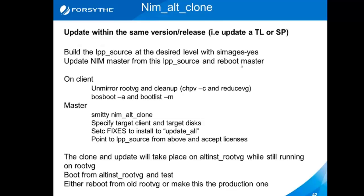In order to set it up, you're going to have to either have an additional disk or unmirror RootVG and clean it up, then sort out your BOSS boot. Then you're going to smitty alt clone and you'll pick your client and target disks. Your client is going to be your initial RootVG, your target will be the one you just freed up or the new disk you added. You set it to do an update or point to the LPP source and tell it to go do the update on the alternate install disk. At the end it is going to reset your boot list, so if you were to reboot you would actually be booting from the new drive.